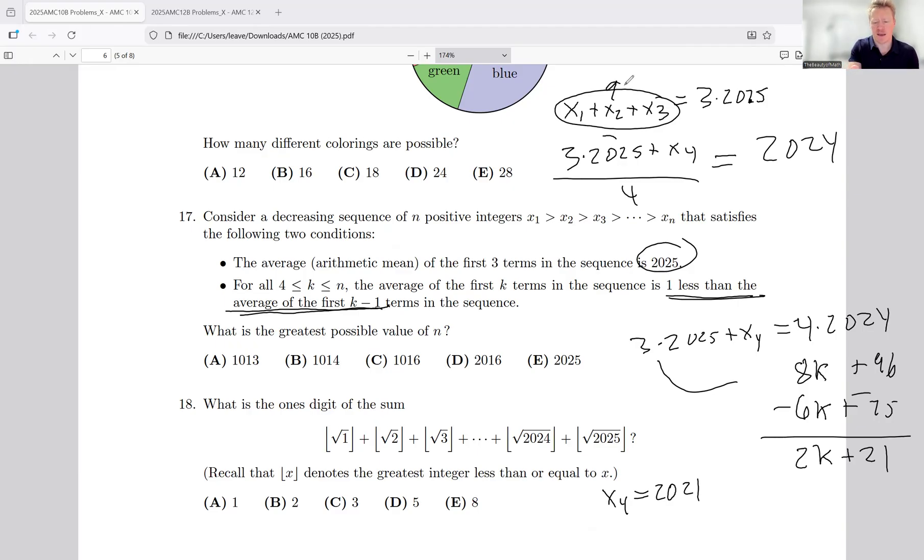So that's going to make your x sub 4 term, no matter what the first three are, is 2021. It's kind of interesting. I almost wonder then: could I make this 2025 in the middle, this 2027, and this 2023?